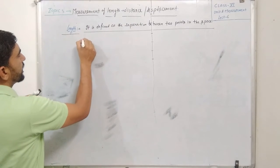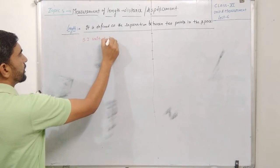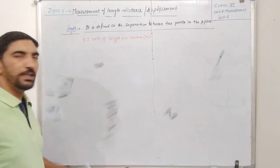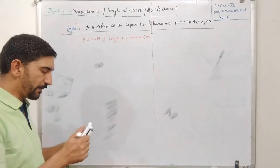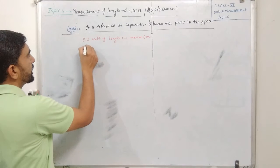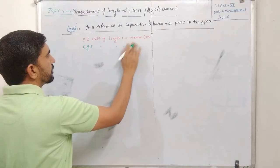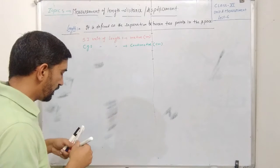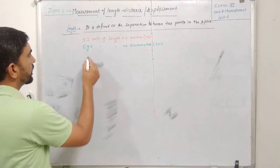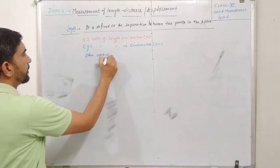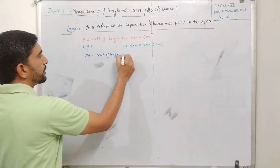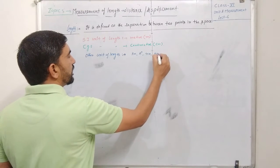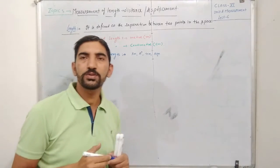The SI unit of length is meter, represented by the symbol M. Length is a fundamental quantity. The CGS unit of length is centimeter. There are different types of units also used in physics and other fields.